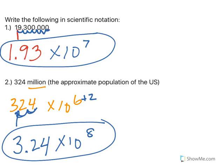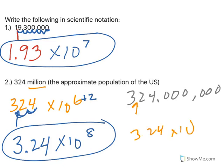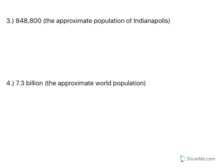On that last problem, you also could have written out 324 million if you wanted to do that first, then move the decimal to 3.24 and counted 3, 6, 7, 8. You could do that also. More than one way to do these problems.